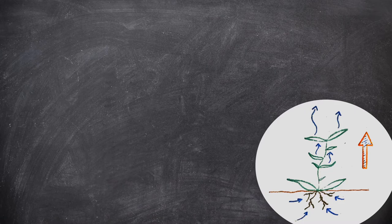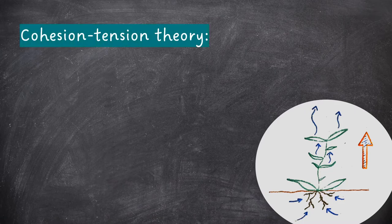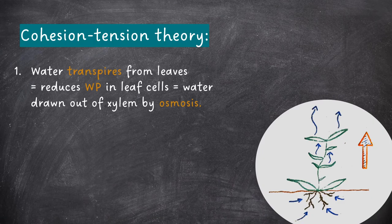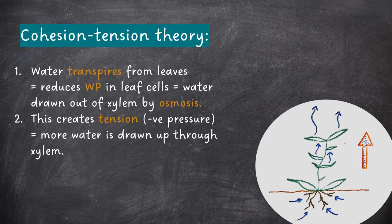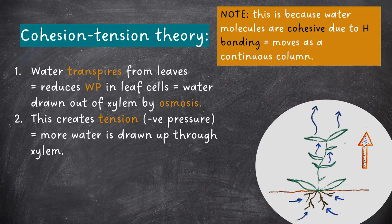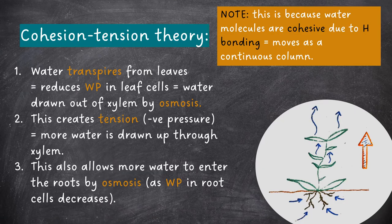Cohesion tension theory explains how water and dissolved mineral ions move from the roots up the stems to the leaves in plants. First, water transpires from the leaves, reducing the water potential in leaf cells, which causes water to be drawn out of the xylem by osmosis. This creates tension — negative pressure — meaning that more water is drawn up through the xylem. Water molecules are cohesive due to hydrogen bonding, so water moves through the xylem as a continuous column. This allows more water to enter the roots by osmosis, because the water potential in the root hair cells decreases.